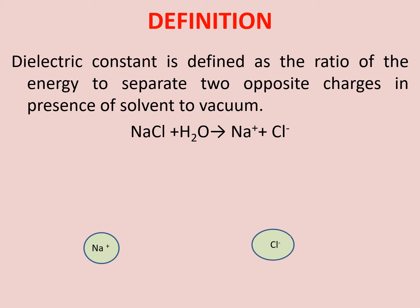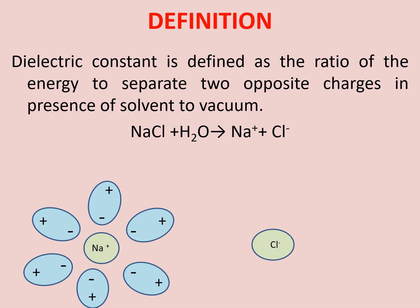Polar nature का है water, that means कि जो water के molecules होंगे, उसमें एक region will be more positively charged and another region will be more negatively charged. Based on these charges, जो Na⁺ ions हैं, they will get surrounded by the water molecule in such a way कि जो negative region है water molecule का, that will be towards the positive ions.